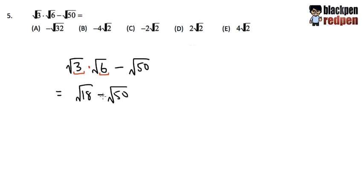Whenever we have a subtraction, we actually don't get to subtract the numbers inside, nor addition. For subtraction or addition, we don't get to add or subtract the numbers inside. This is what we do to combine square root numbers whenever we have subtraction or addition. So let's ask ourselves, do we know what's square root of 18? We don't, because it's not a nice number. How about square root of 50? We also don't, because that's not a nice number either.